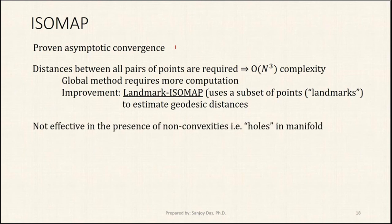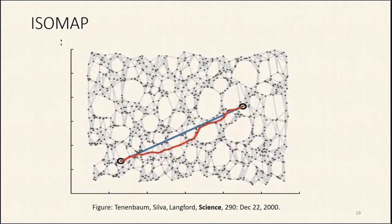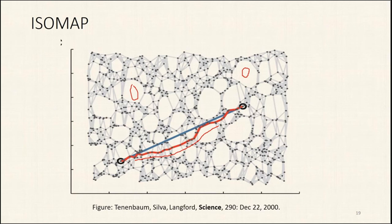Isomap is not very effective in the presence of non-convexities — that is, holes in the manifold. When we take the shortest path distance, we must avoid the holes since they are not connected by any edges. The resulting path ends up being longer than the actual geodesic distance between those points. That's when Isomap doesn't do such a good job.